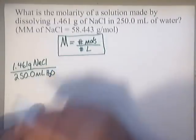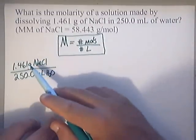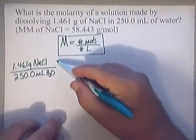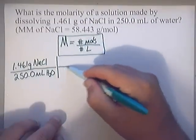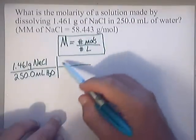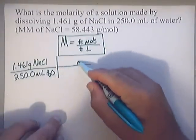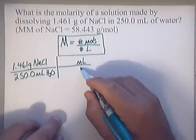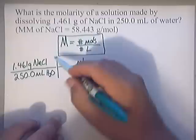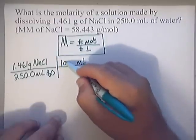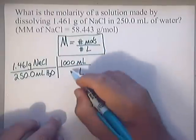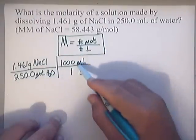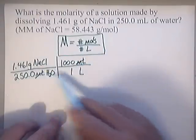Now I'm going to convert milliliters into liters — that's the easiest step first. I'm simply going to write milliliters up top and liters on the bottom. I know that there are 1,000 milliliters in one liter, so I've successfully now converted it to grams over liters.